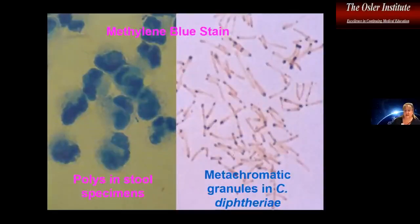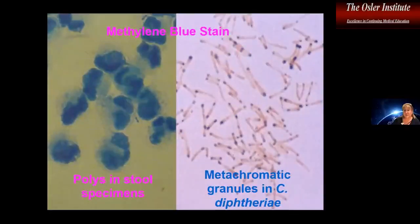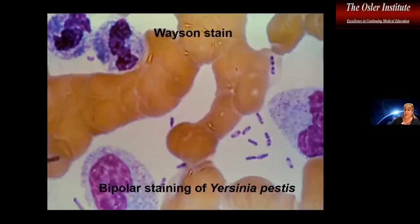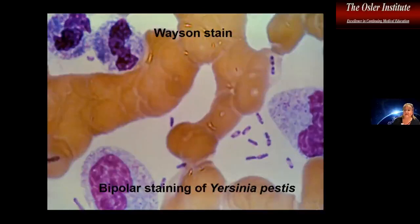Besides gram stain, some people still use methylene blue stain to detect neutrophils in stool specimens to determine inflammatory versus non-inflammatory diarrhea. Methylene blue can also be used — though not in many labs anymore — to detect the metachromatic granules of Corynebacterium diphtheriae. You can also use the Wayson stain to detect the bipolar staining of Yersinia pestis. Importantly, bipolar staining can sometimes be seen on gram stain with enteric gram-negative rods, which is not necessarily indicative of Yersinia pestis — other enteric organisms including E. coli also demonstrate bipolar staining on gram stain.